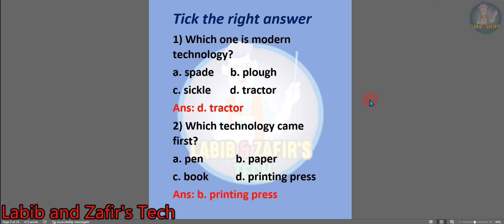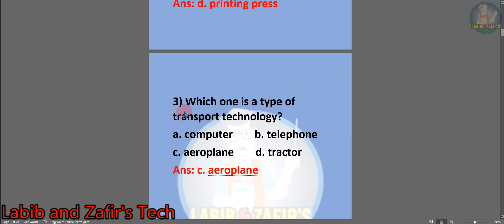Now I have some tick marks — pick the right answer. Number one: which one is modern technology? A) spade, B) plough, C) sickle, D) tractor. The answer is D) tractor. Number two: which technology came first? A) pen, B) paper, C) book, D) printing press. The answer is D) printing press. Number three: which one is a type of transport technology? A) computer, B) telephone, C) airplane, D) tractor. The answer is C) airplane.